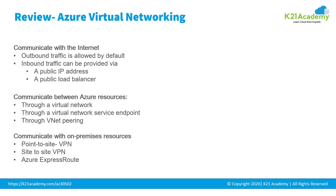We will talk about several communication scenarios: communicating with the internet, between Azure resources, and with on-premise resources. All resources in a VNet can communicate outbound to the internet by default. You can communicate inbound to a resource by assigning a public IP address or a public load balancer. You can also use a public IP or public load balancer to manage your outbound connections.